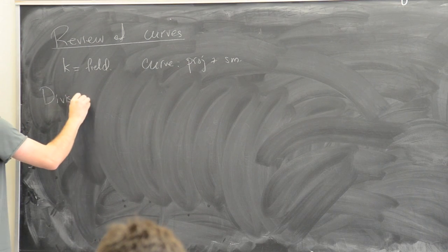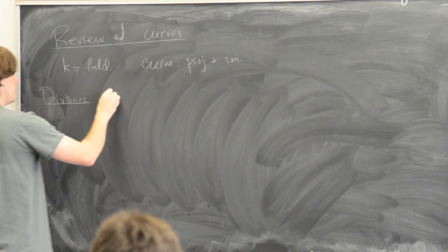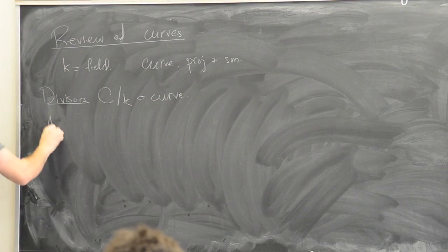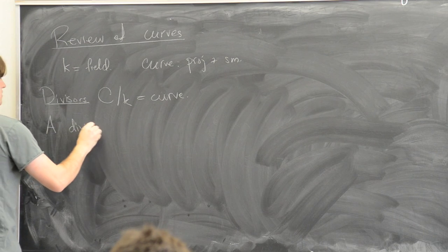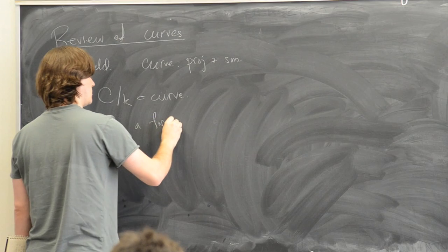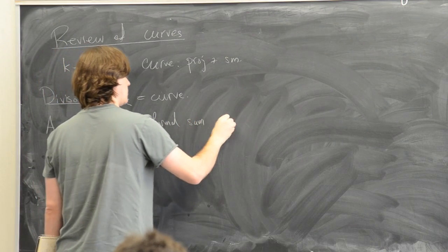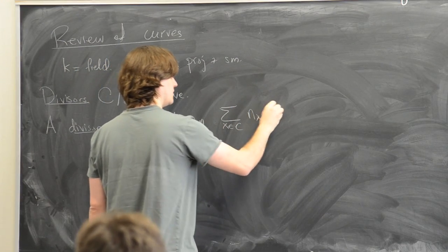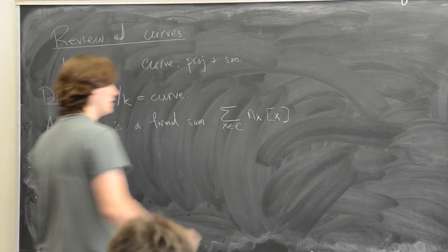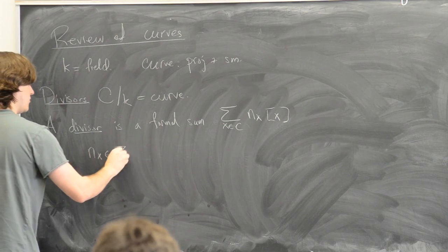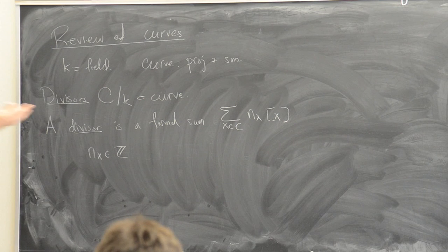The first thing I want to talk about is divisors. Suppose C is a curve over our base field. A divisor on C is just a formal sum of points — a sum over the points of C with integer coefficients, written as a formal sum. The coefficient n_x is in Z and the sum is finite, so all but finitely many n_x are zero.